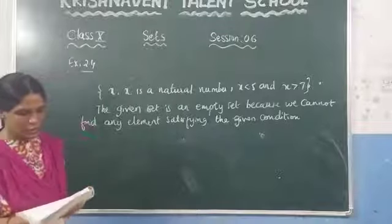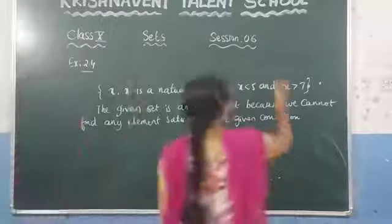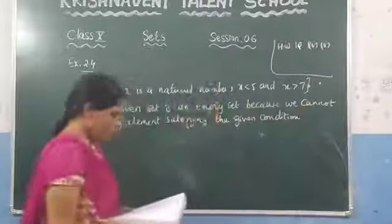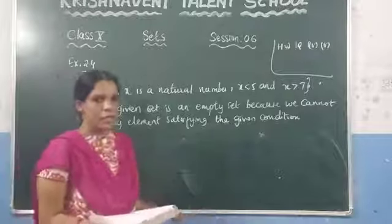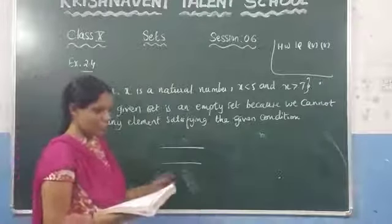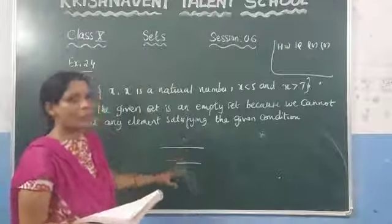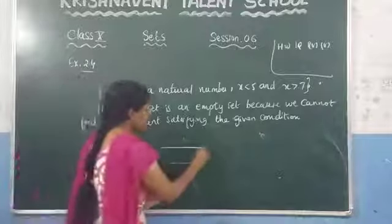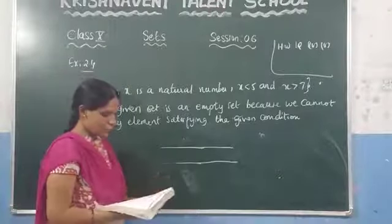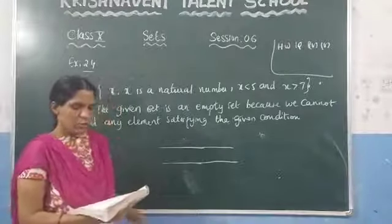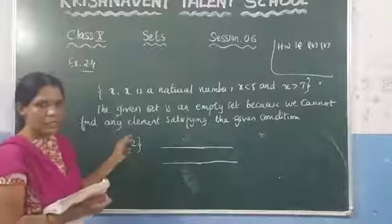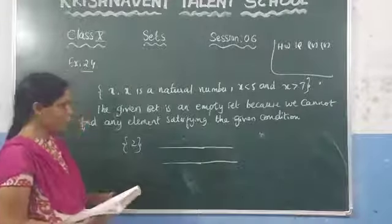For the fourth option: the set of points common to any two parallel lines. If you take any two parallel lines, you will never get a common point, because if you extend those parallel lines they will not intersect at any point. So we can say that it is an empty set. The fifth option: the set of even prime numbers. You know that 2 is the even prime number, so since it contains at least one element, it is a non-empty set.